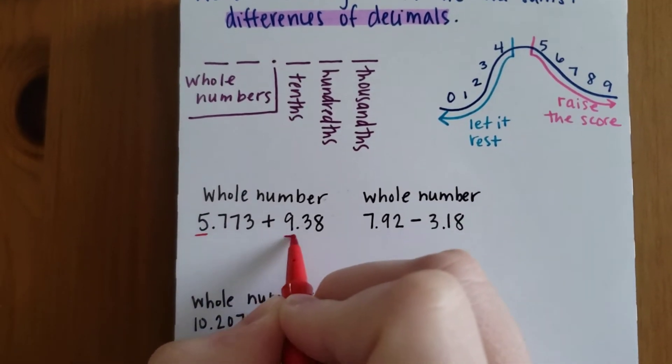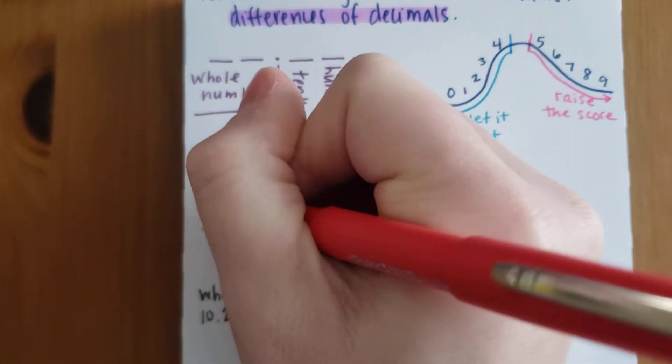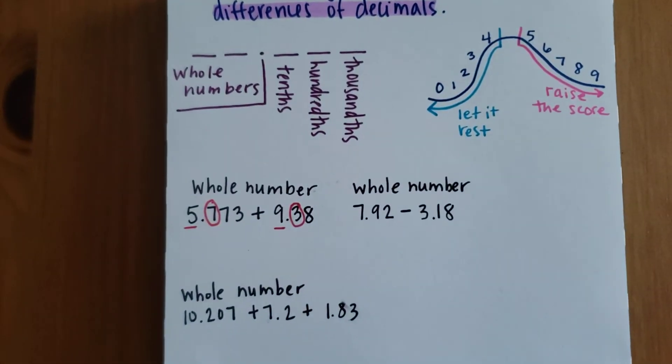our 5 and our 9 are going to be in our whole number spots. So that means we're looking at the 3 and the 7 to decide what we're going to do.